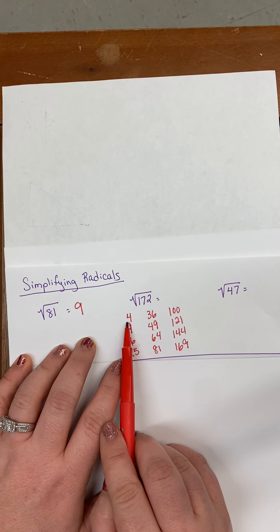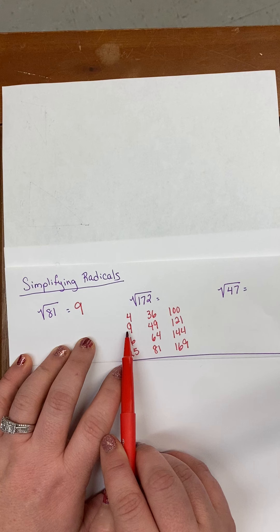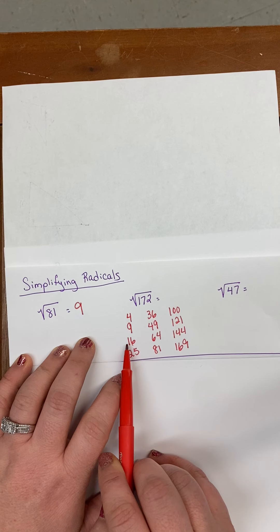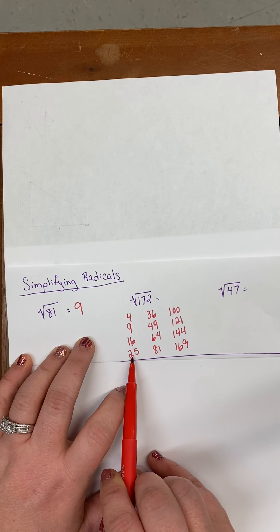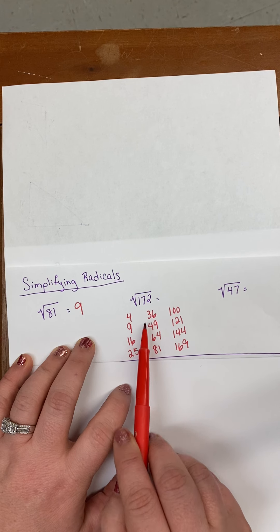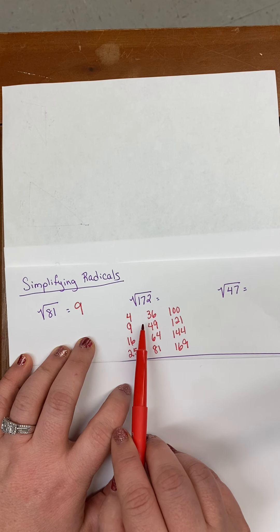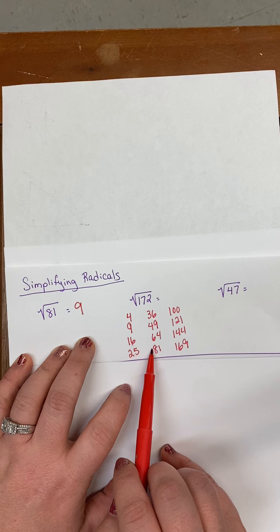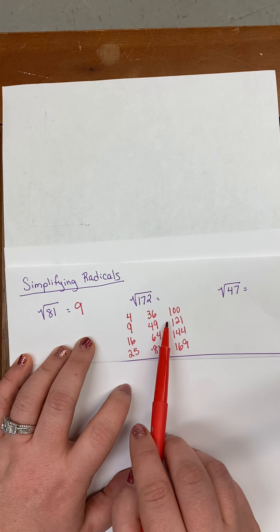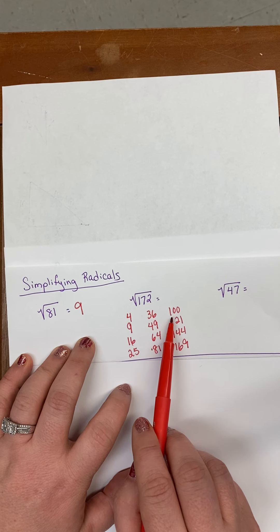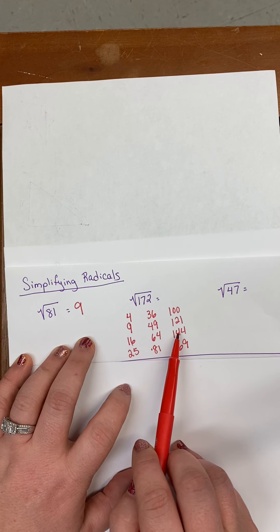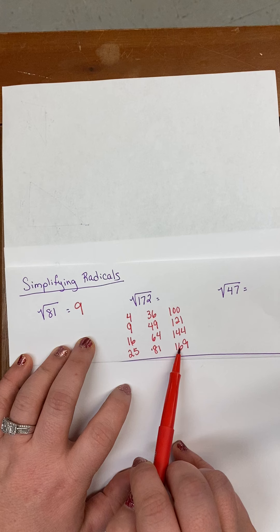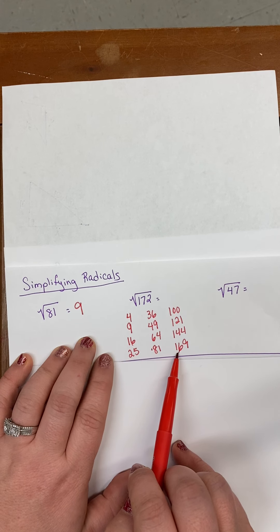Where do these numbers come from? 2 times 2 is 4. 3 times 3 is 9. 4 times 4 is 16. 5 times 5 is 25. And so on and so forth: 6 times 6, 7 times 7, 8 times 8, 9 times 9, 10 times 10, 11 times 11, 12 times 12, 13 times 13.